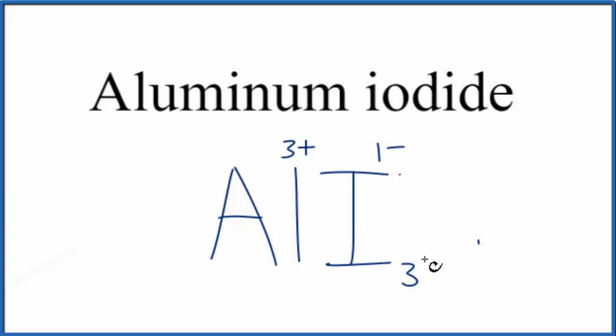We could also use what's called the crisscross method. We take the aluminum here, move the 3 down here, and then for the iodide ion, move the 1 here. We don't write the 1 by convention though. Let's get rid of these charges. That gives us the same answer, AlI3, as the formula for aluminum iodide.